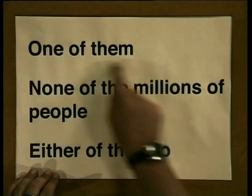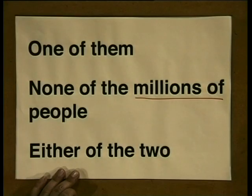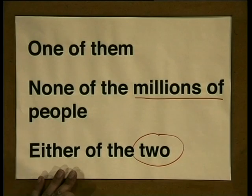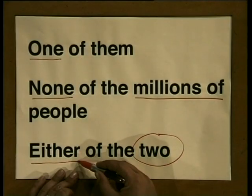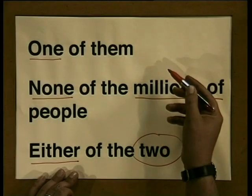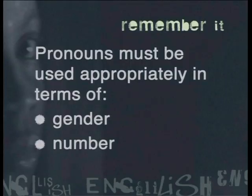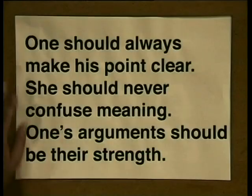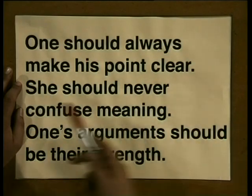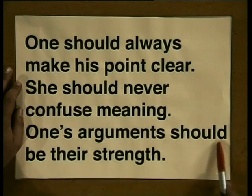What you must remember is that all of these words — the one, the none, the either — don't count what comes after them. Instead, they are singular anyway. So let's formulate the rule: pronouns must be used appropriately in terms of their gender and their number. I'd also add that pronouns should always be used consistently. So I've made up a passage in which I break a number of pronoun rules. Let's see if you can identify those errors. One should always make his point clear. She should never confuse meaning. And one's arguments should be their strength.